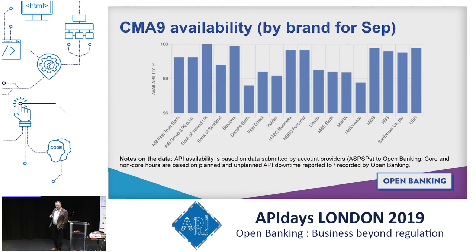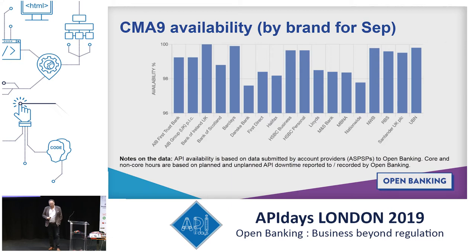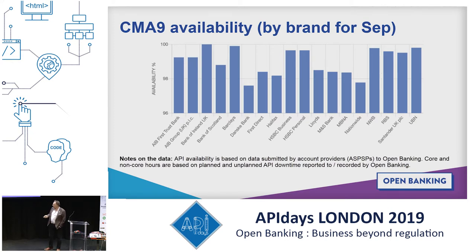If we look by CMA 9 brand, you can see some of the CMA 9 are getting 100% and some of them are considerably off that. The reason behind that, we believe, is that the banks are quite frequently introducing changes — either to fix issues, and we have been updating the standard fairly frequently as well — and they're implementing new versions of the standard. Many of the banks are not able to implement change in a live environment without taking various components of the architecture down, which affects availability.